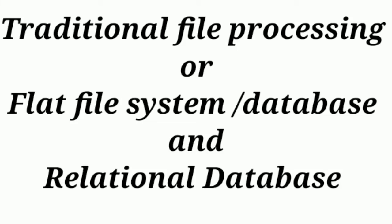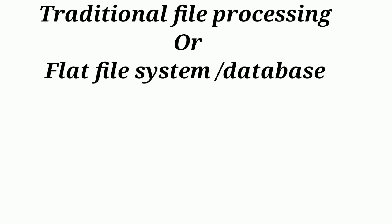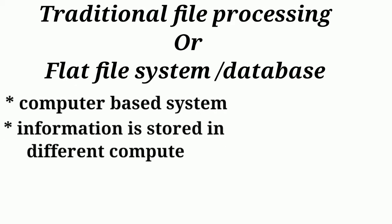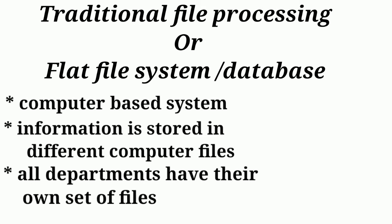In this video, we will study the traditional file processing system and the relational database. The traditional file processing system is a computer based system where all the information is stored in different computer files, in a manner that all the departments of an organization have their own set of files, which creates redundancy.